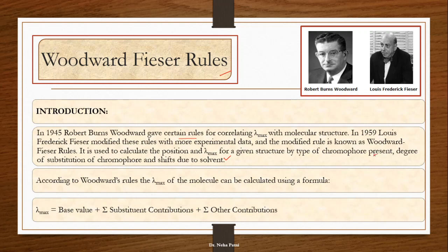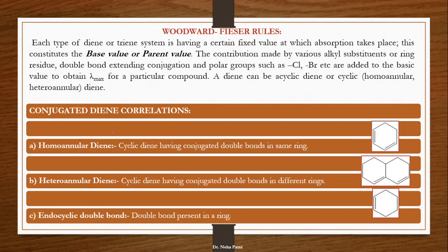According to this rule, certain factors contribute to the wavelength, and you have to calculate their contribution along with the base value of the compound. Before calculating the base value, you must first identify the diene or triene system — the double bond system. There are also certain terminologies you should understand before proceeding.